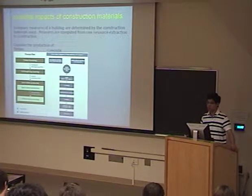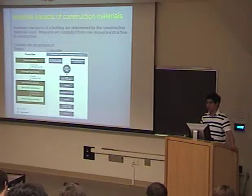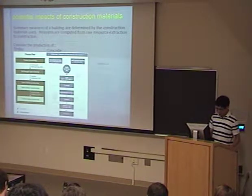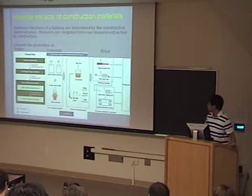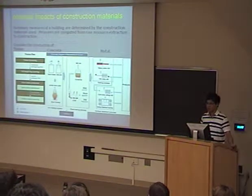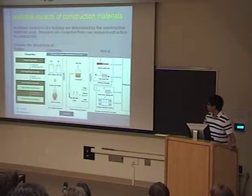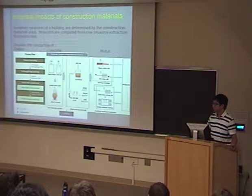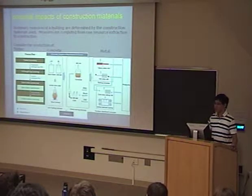Concrete has about three times as much primary energy consumption and about 11 times as much greenhouse gas emissions. The third material, metal, is also a very complex process, so the energy involved is also a lot. For one kilogram of metal processed, it takes about 100 megajoules of energy.